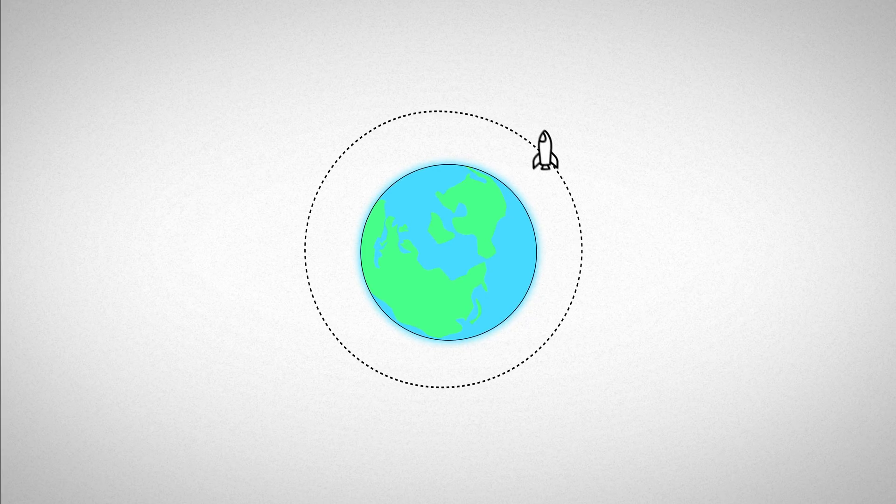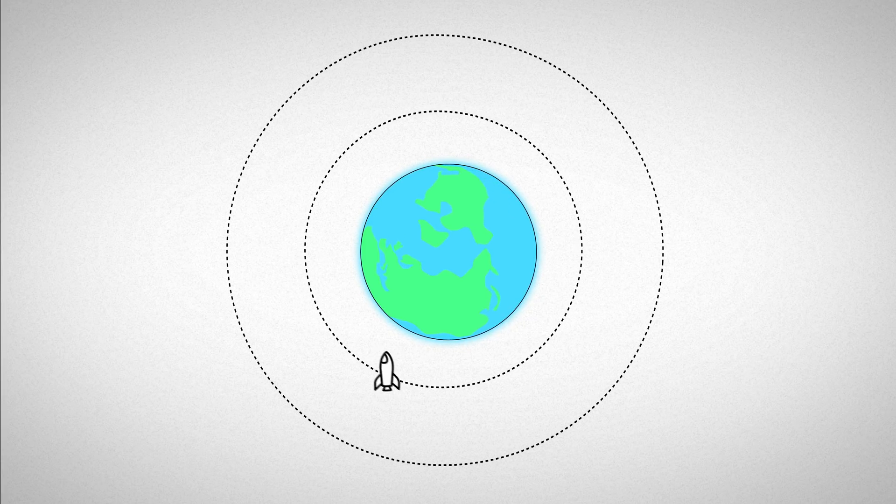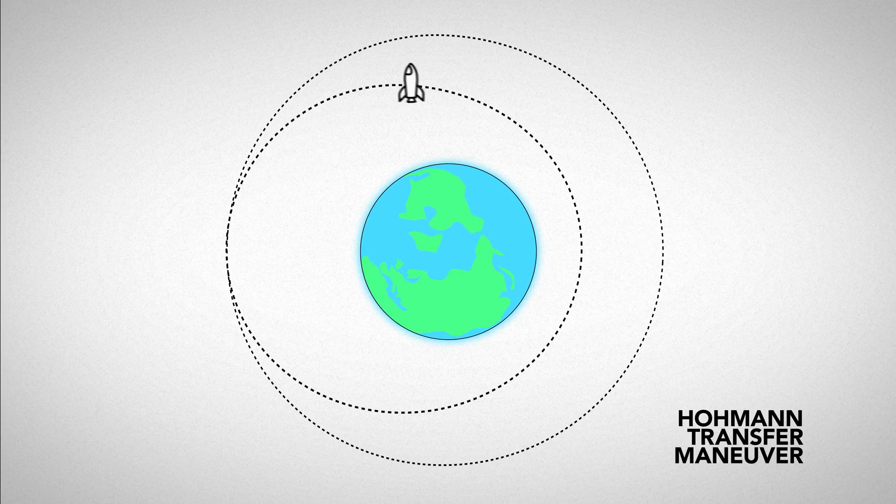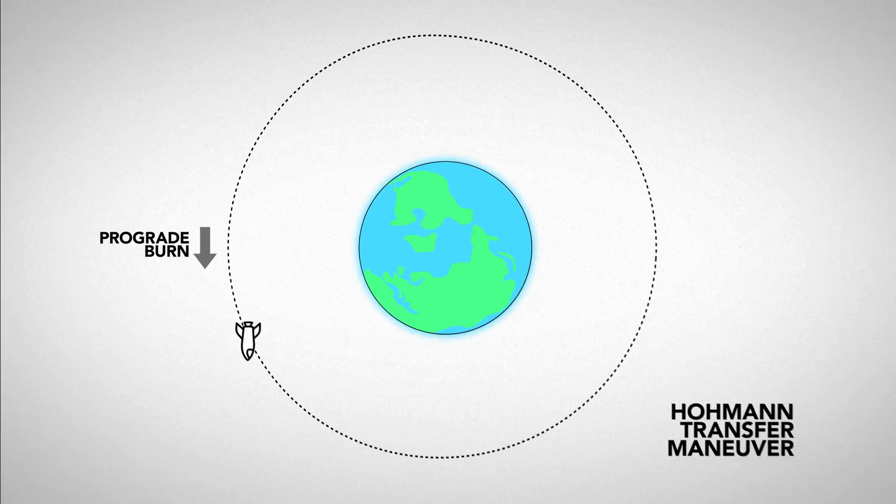And if we're orbiting in a circle and we just want to get to a higher orbit we need to first fire our engines forward to raise our orbit on the opposite end and then wait until we reach that high point and fire our engines again to circularize it.